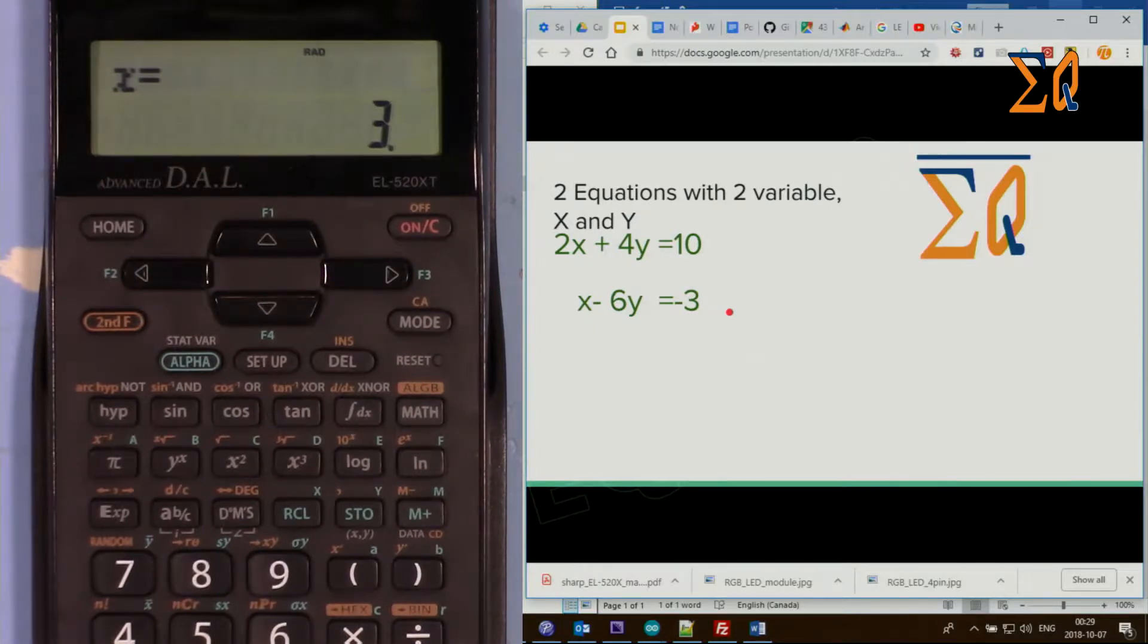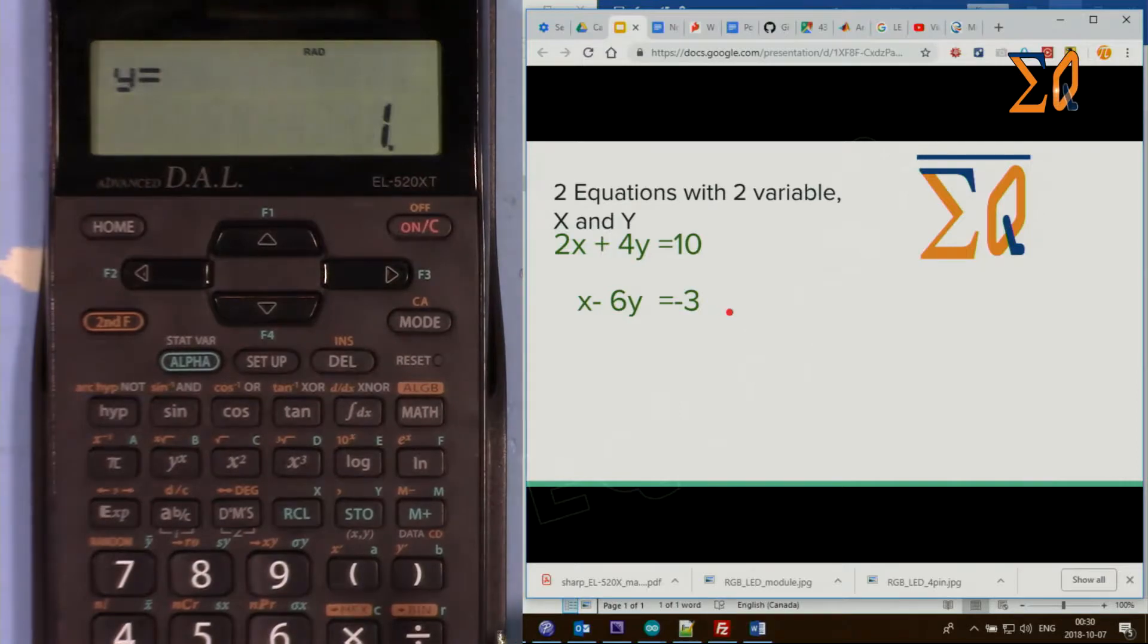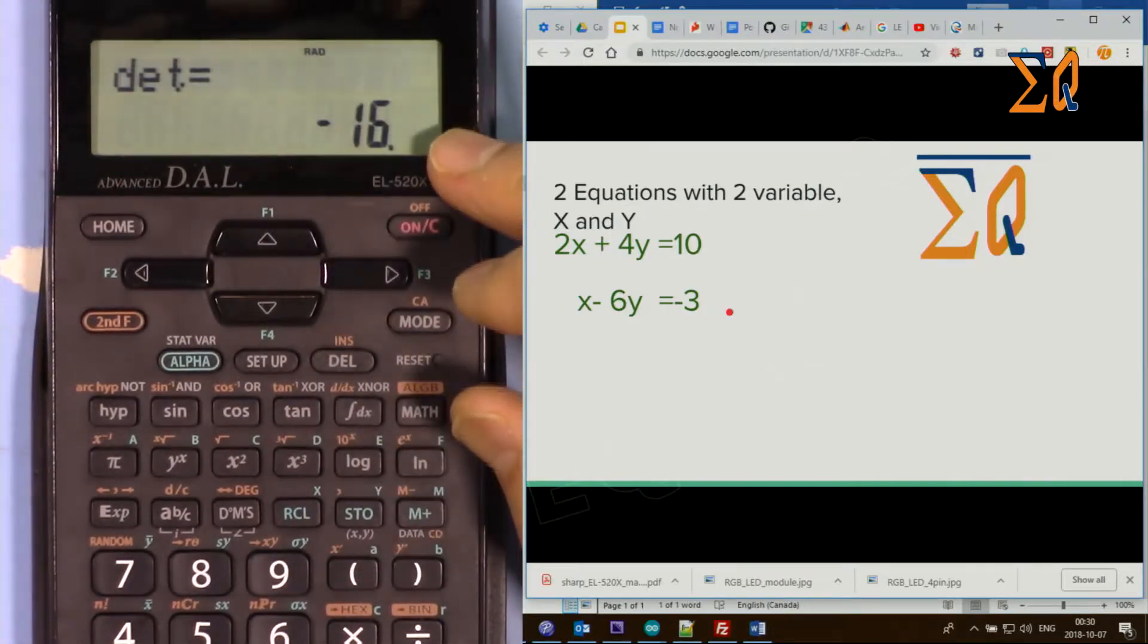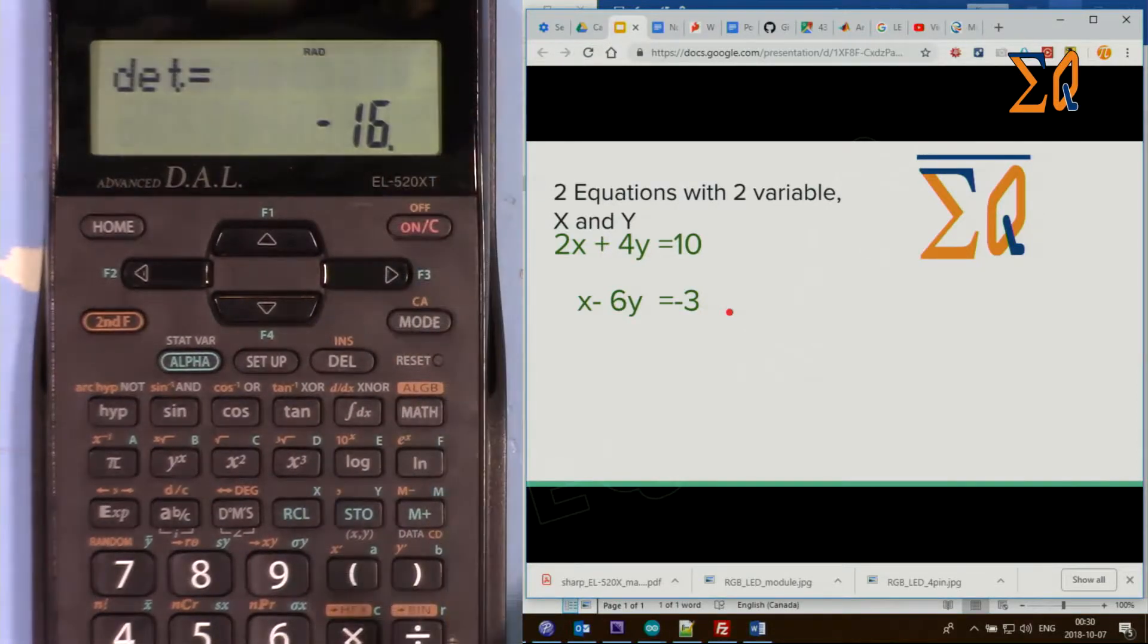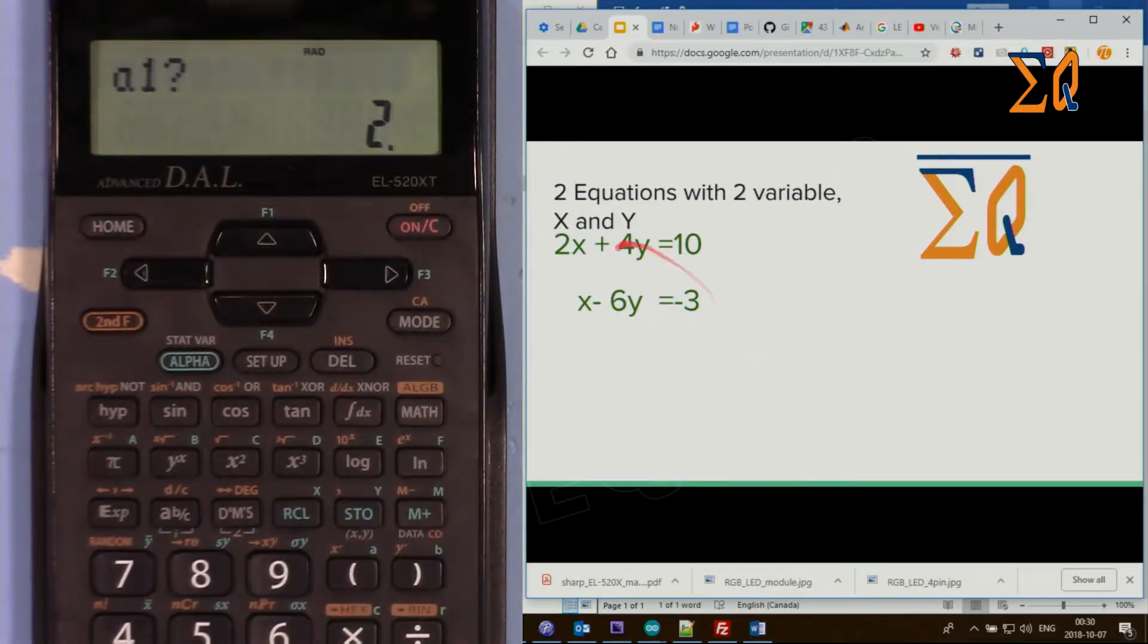If you press equal sign it will tell you also the y, y is 1. And it shows also the determinant of the equation minus 16. When you press it again it comes back so you can enter another equation.